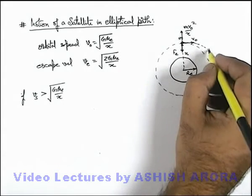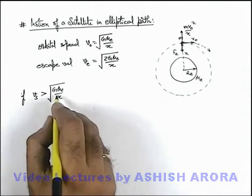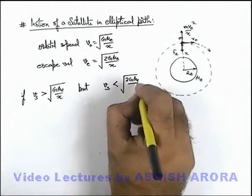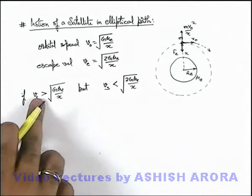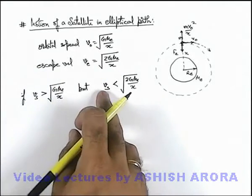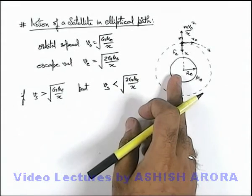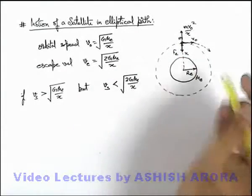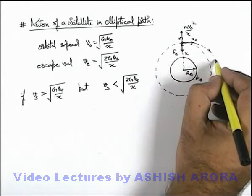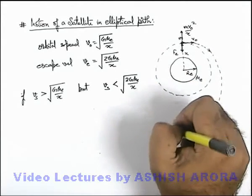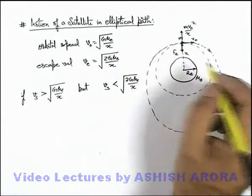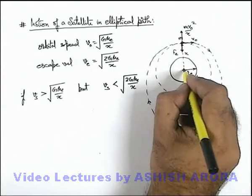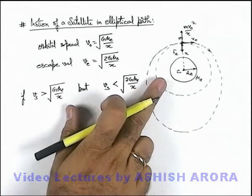So here we can state: if the satellite speed is more than the orbital speed, but also less than the escape velocity √(2GMₑ/x), that means the velocity of the satellite is more than the orbital speed but not sufficient enough for it to escape from Earth's gravitational attraction. If it is less than escape speed, the total energy of the satellite will be negative and it will be in a bounded motion. That means it just came out of the circular orbit but will not be able to escape — it will follow an elliptical path, finally return to the initial position, and continue this elliptical path only.